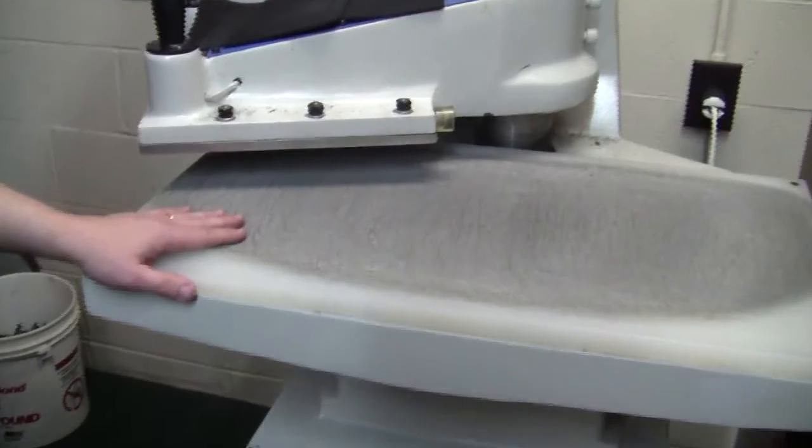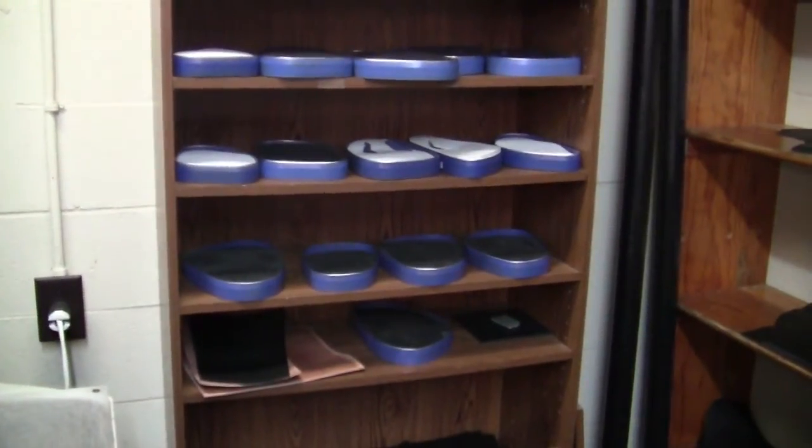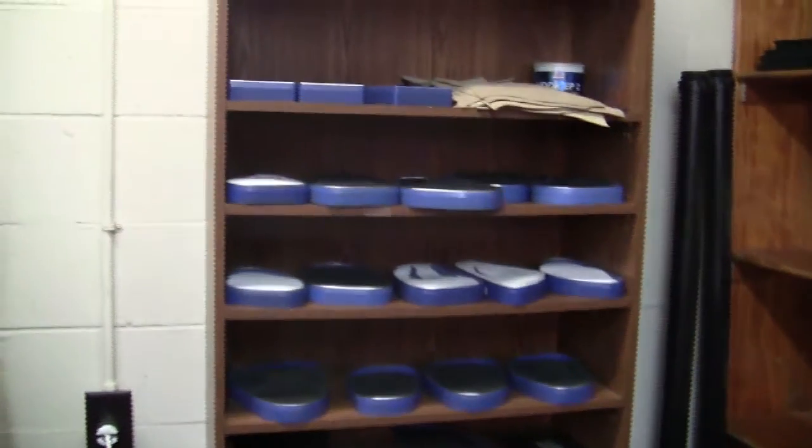Then we use our hydraulic press. It's what's called a clicker. And we use these dies on the shelves right there to cut out the different size pieces that we need and stuff for the process.